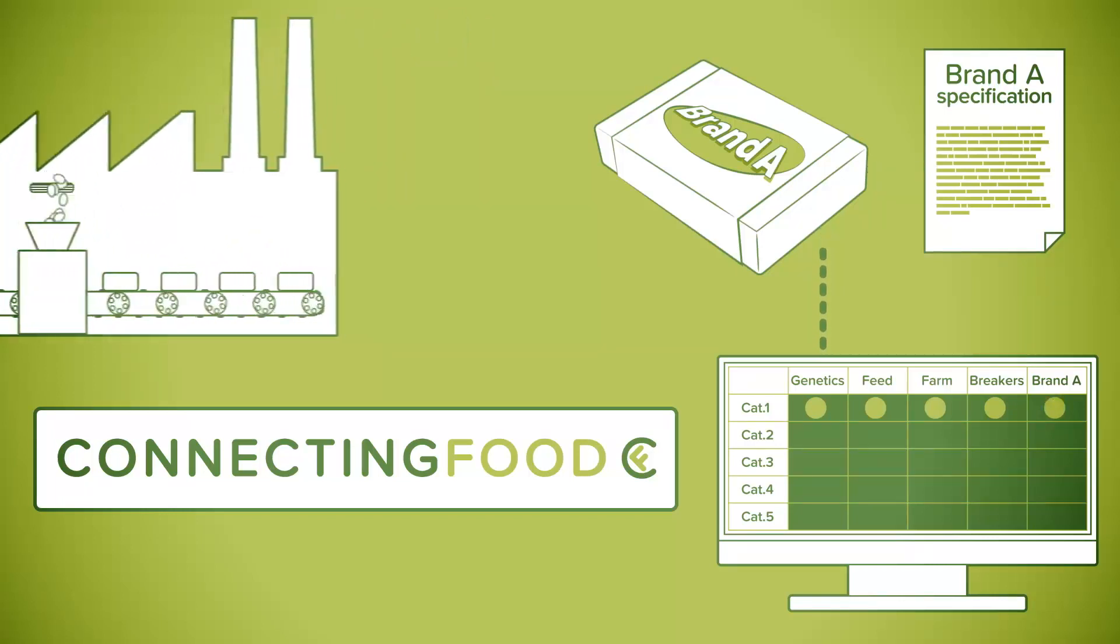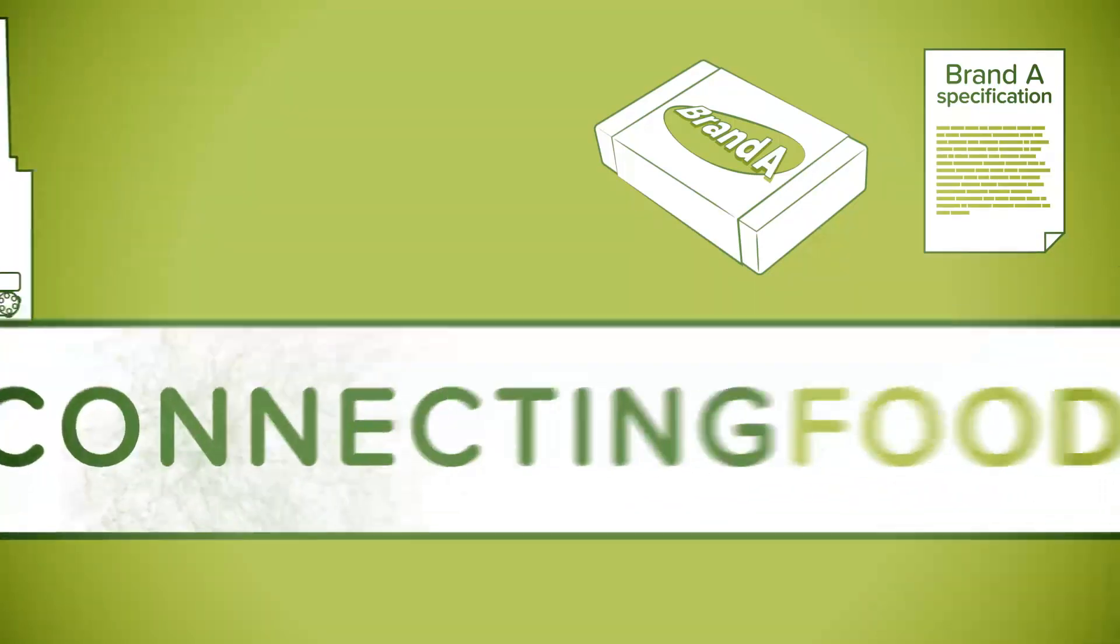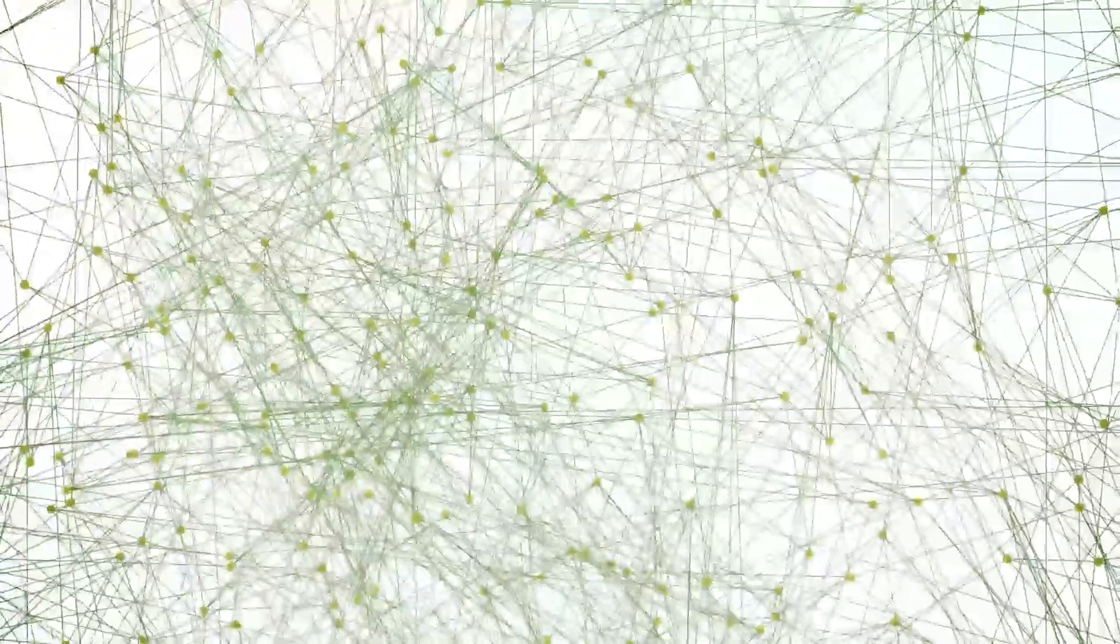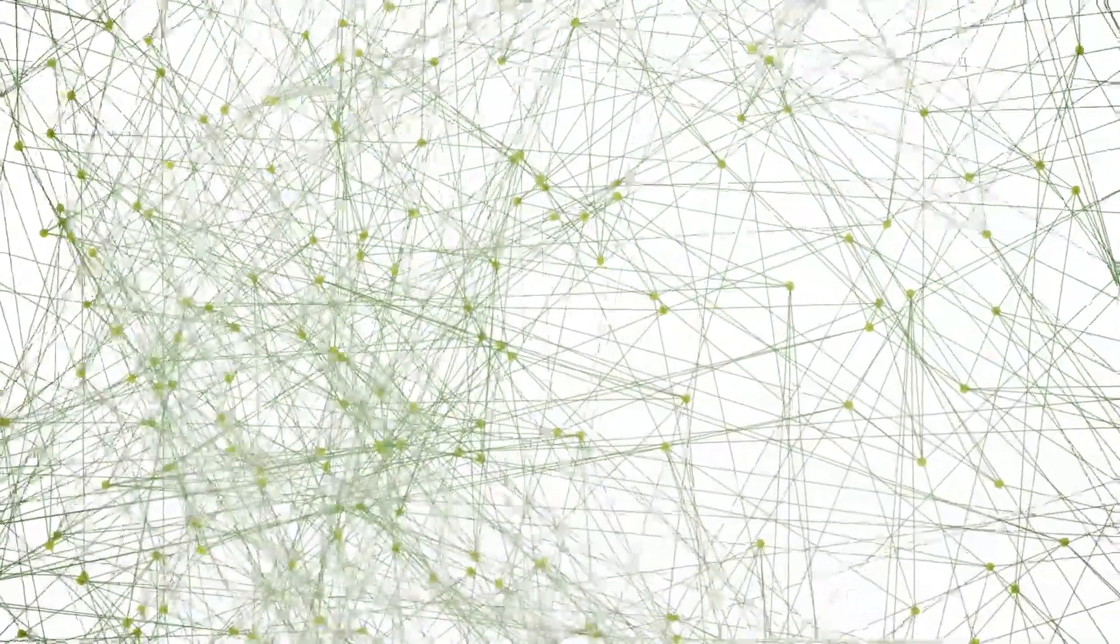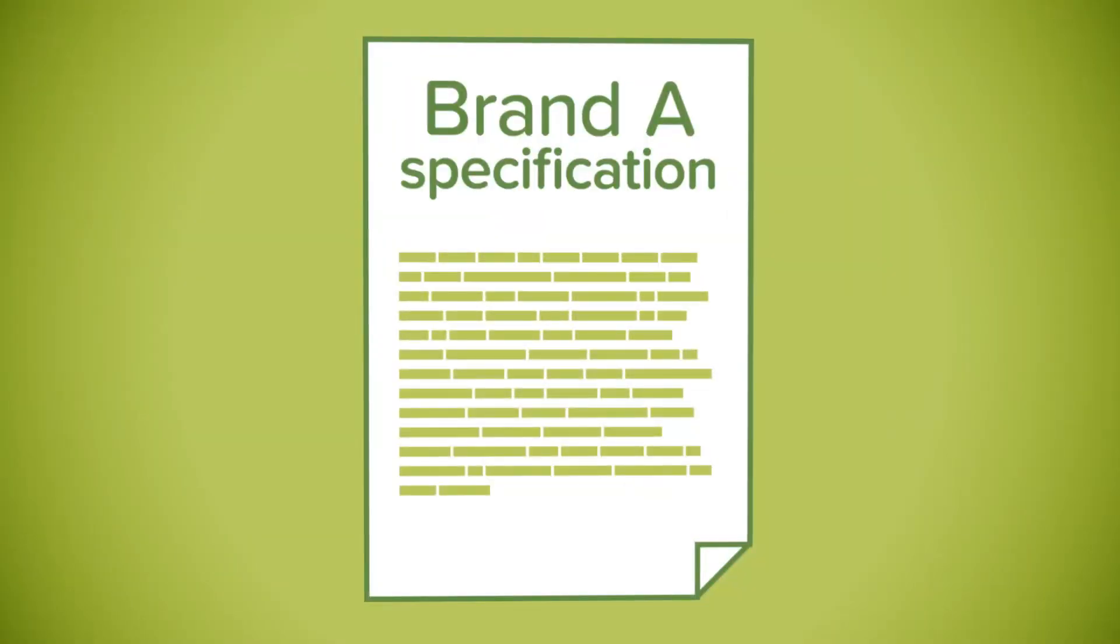How does it work? Information from each supplier's production along the chain is continuously sent into the Connecting Food system. Using blockchain technology, compliance with the end product specification is verified.